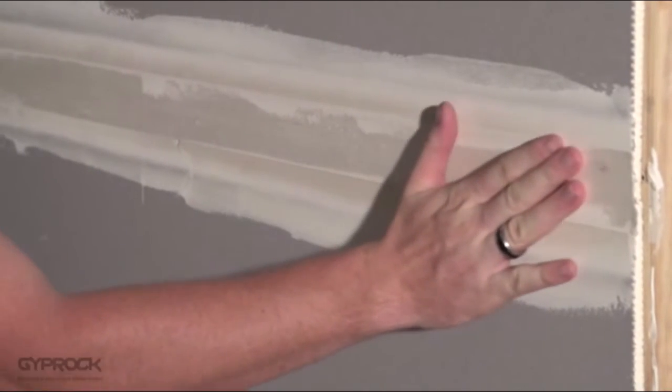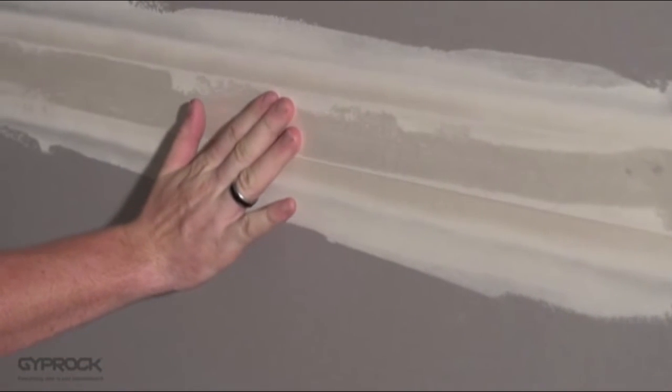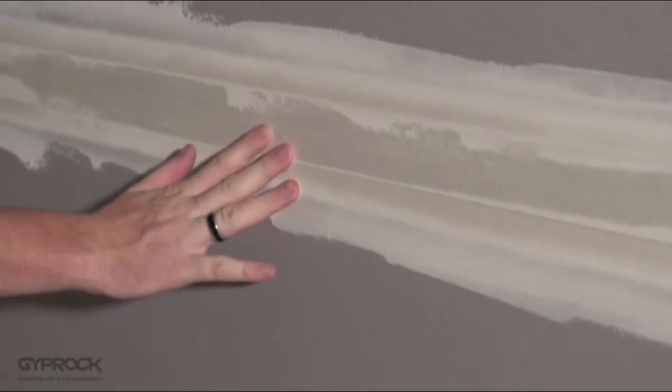The next issue you might see is visible tape, which could be due to lack of coverage or over-sanding. Just apply another coat, wider than the last, let it dry fully before sanding.